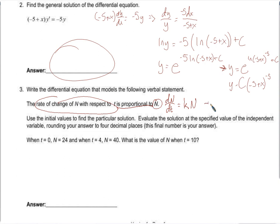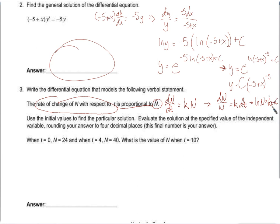Taking the antiderivative gives the natural log of n equals kt plus c, because k is just some constant. If I took the antiderivative of 4 with respect to t, I'd get 4t plus c. Exponentiating both sides, we get n equals c·e to the kt. That's our general solution.